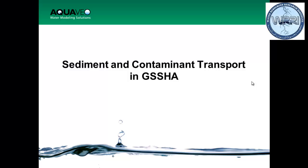I'm going to talk about sediment and contaminant transport in GSSHA. You've learned how to set up a GSSHA model. There are several different processes you can add, such as groundwater. The main thing is to first get your GSSHA model running with no processes at all — get a basic model running. You could do infiltration, but don't do anything else. Once you get that model running, then you can consider adding sediment, contaminant transport, and groundwater processes.